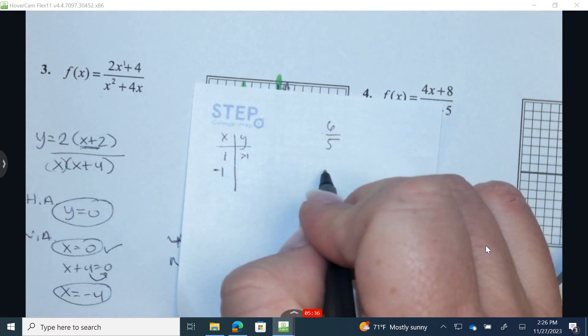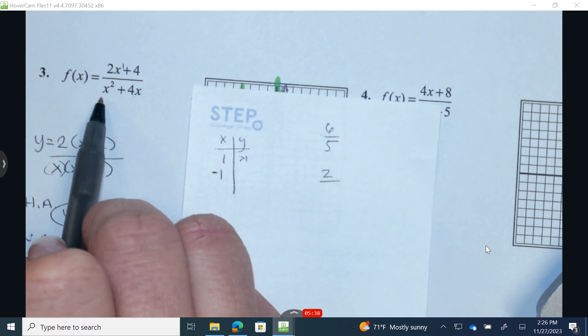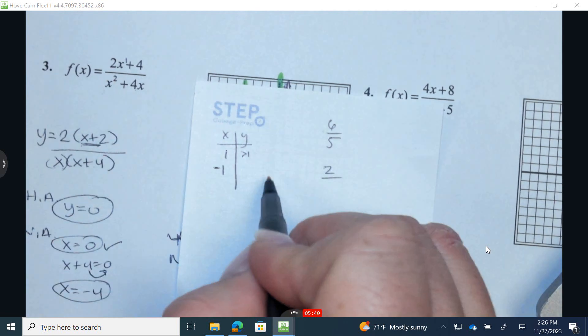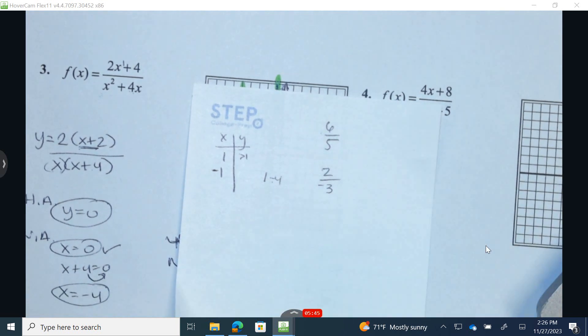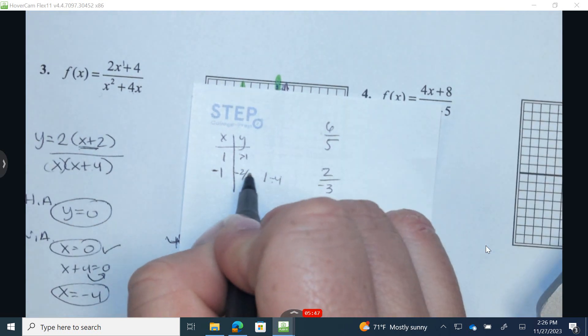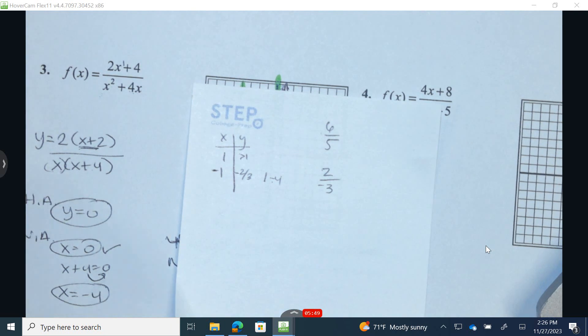2 times negative 1 is negative 2. And negative 2 plus 4 is 2. Negative 1 squared is 1. And 4 times negative 1 is negative 4. So 1 minus 4 is negative 3. Okay, so when I plug in negative 1, I get an output of negative 2 thirds.